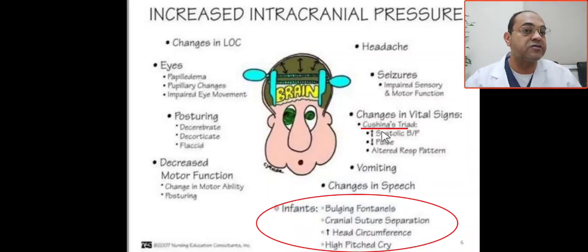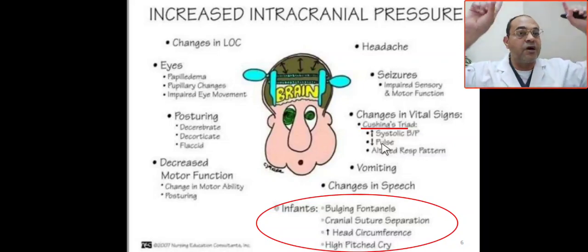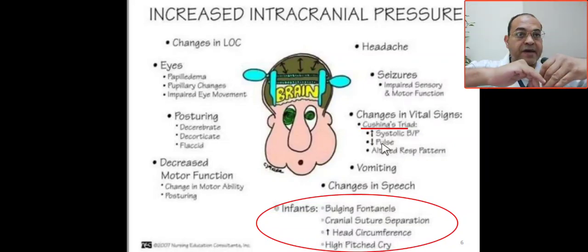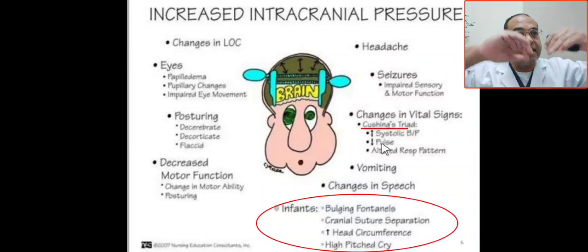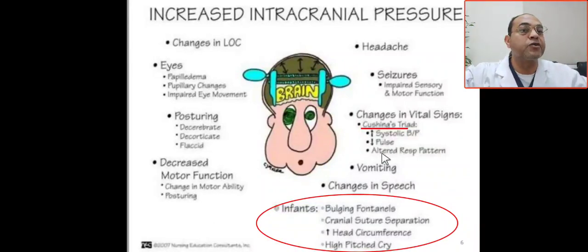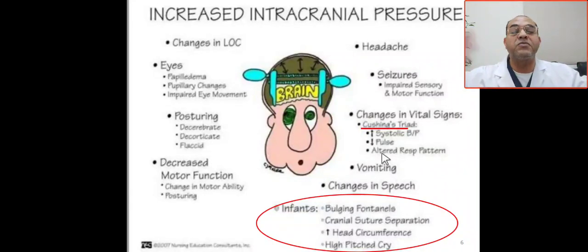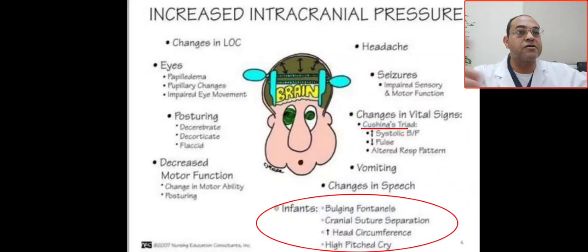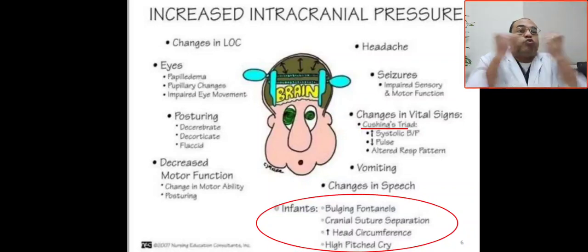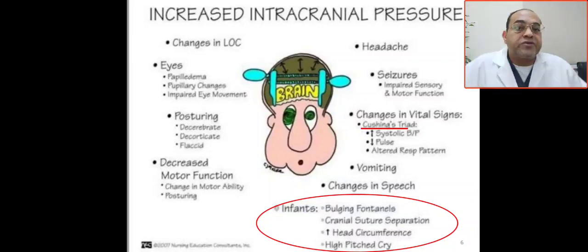There is also a vital sign pattern called Cushing's triad: blood pressure will be high (hypertension), heart rate will be low (bradycardia), and respiration will be irregular or abnormal. In addition, increased intracranial pressure can cause headache, vomiting, seizures, abnormal movements, and motor posturing such as decorticate or decerebrate posturing.